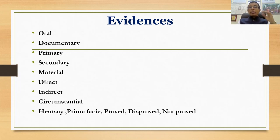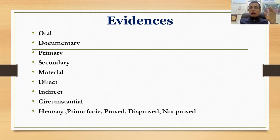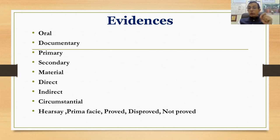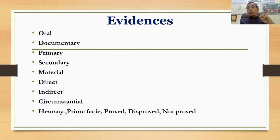Prima facie evidence means the initial impression or idea you get from the evidence. Proved evidence means the court, after considering all facts, has found something to be proved. Disproved evidence means the court has found something to be disproved after considering all facts. Not proved means it is neither proved nor disproved — that is not proved evidence.